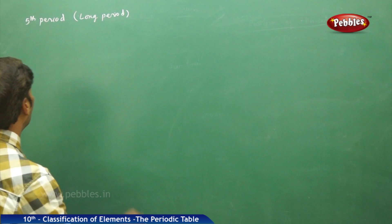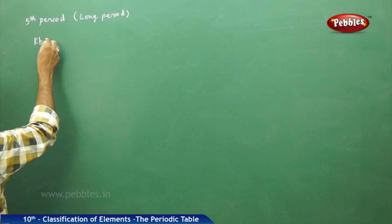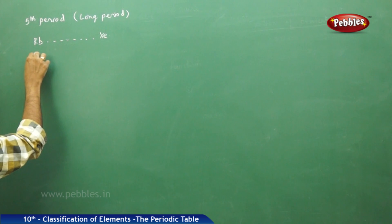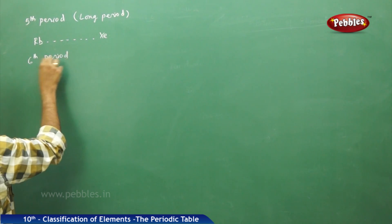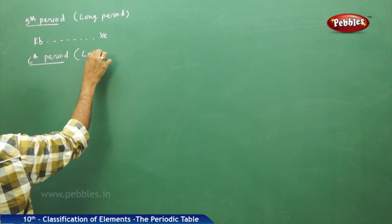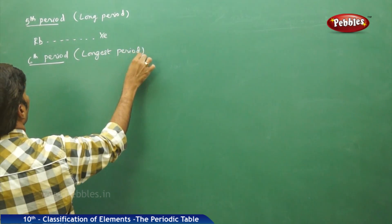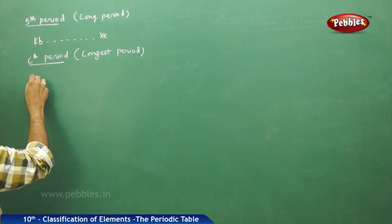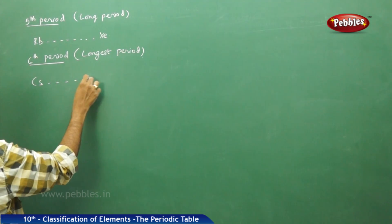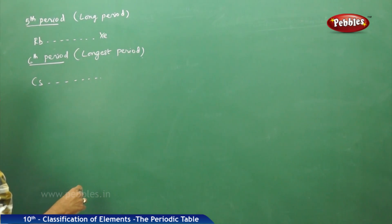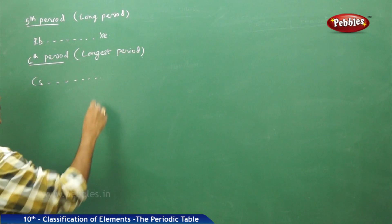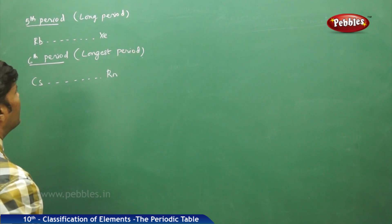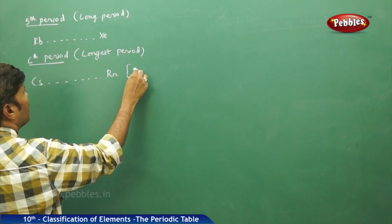The fifth period is a long period and it starts with rubidium and ends with xenon. The sixth period is the longest period, starting with cesium. The noble gases in sequence are neon, argon, krypton, xenon, and radon. The sixth period contains 32 elements altogether.